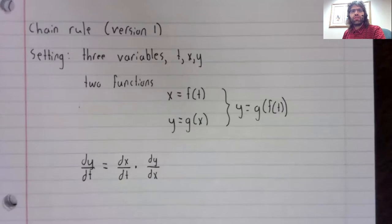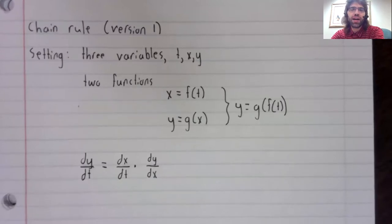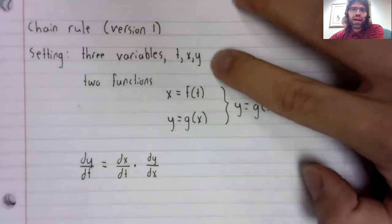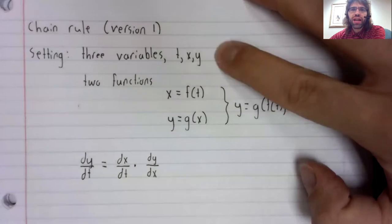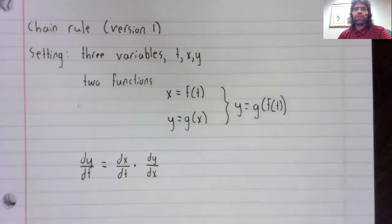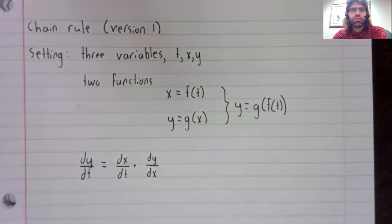Version one of the chain rule is kind of specialized. It usually shows up if you're doing word problems, because we have to have three variables, and most of the equations we look at don't have three variables, just x and y. However, although version one of the chain rule seems like it exists in a pretty specialized setting, we'll see that the chain rule is not specialized at all, but can be used to take the derivatives of all sorts of things.